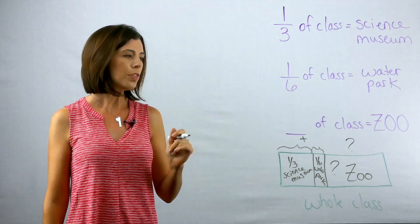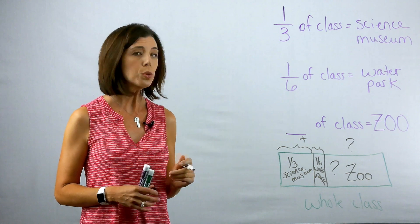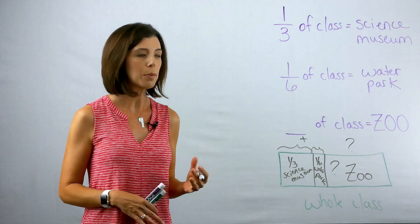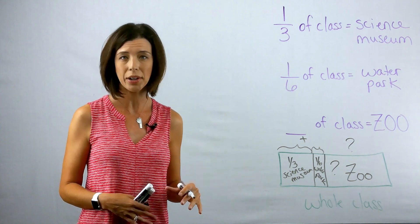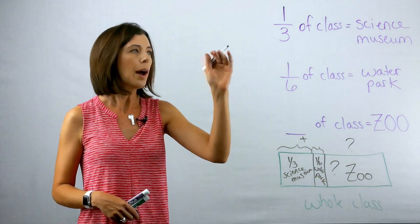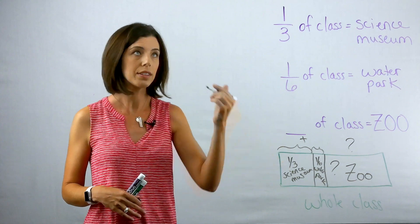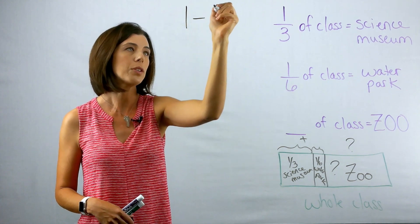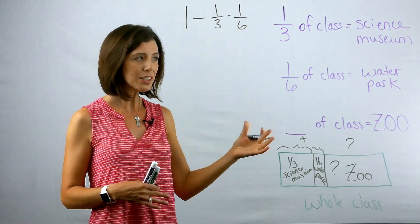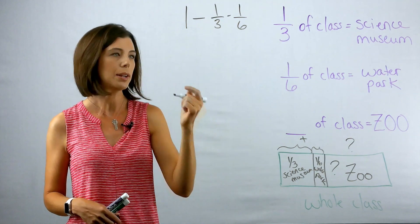So first I'm going to add one-third and one-sixth together. Now let me just give a caveat here. You could take the whole and start subtracting away. That would also work. And when I say the whole, I'm literally just talking about one. One is the whole in this case. So you could take one and subtract one-third and then from that number subtract one-sixth. I think that the easier thing in this case is to add my two fractions together and then subtract them from the whole. So that's what I'm going to do.